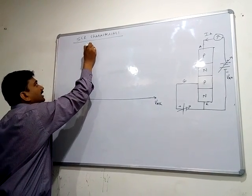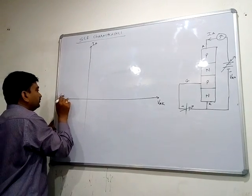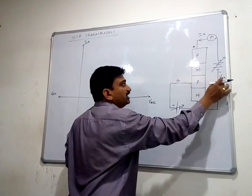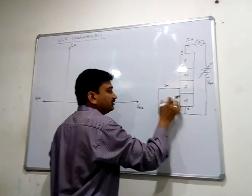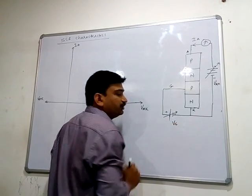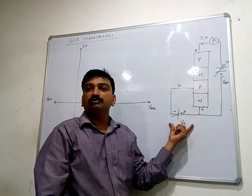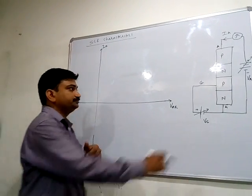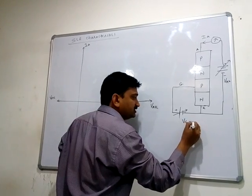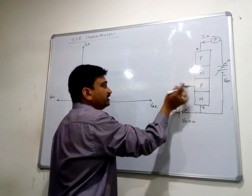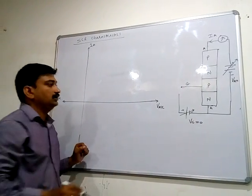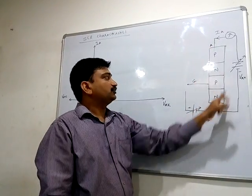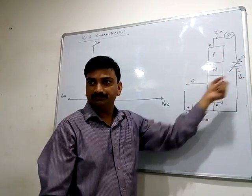We will draw a graph showing variation in voltage between anode and cathode (VAK) on one axis and anode current on the other. The gate voltage will be set to different values of VG. First, we will keep VG equal to zero — meaning the gate has zero voltage or is open — and we will increase VAK and observe the anode current. Anode and cathode are in forward bias as we increase the voltage.